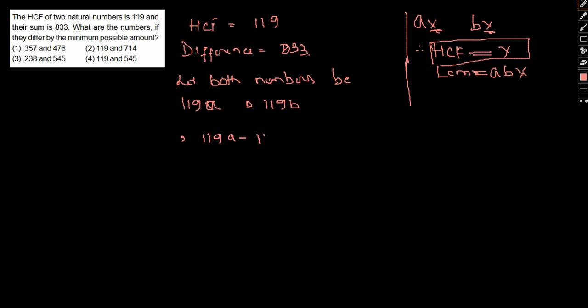Now it is given 119A minus 119B is 833. Therefore, if I take 119 common, A minus B, we get 7. So A minus B should be 7.